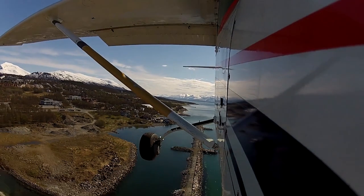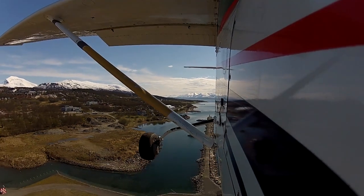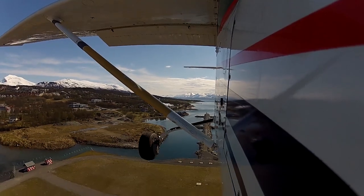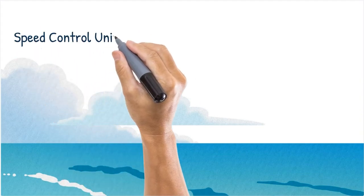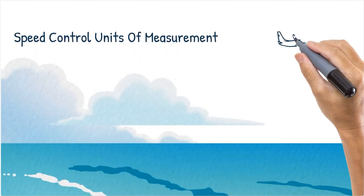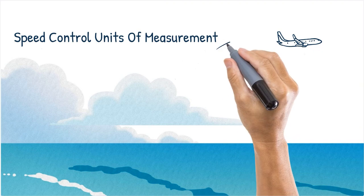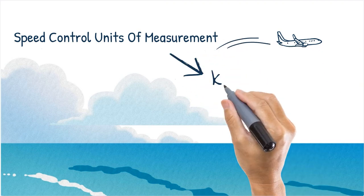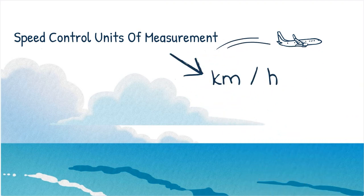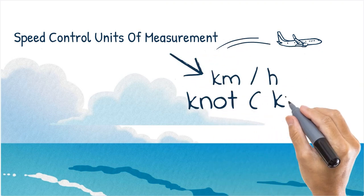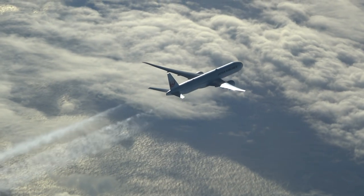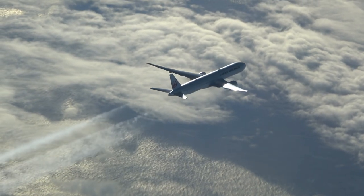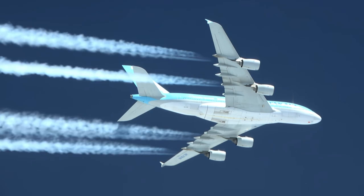Before going into the actual speed control scenarios, we must first understand the basics. Although the official ICAO recommendation for aircraft speed measurement is kilometers per hour, a knot is more commonly used worldwide. Mach numbers are used when flying at high-level cruising altitudes, but Mach number techniques we leave for later.